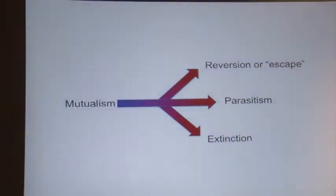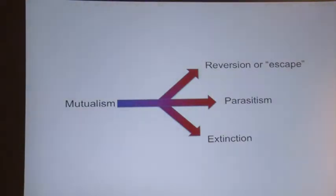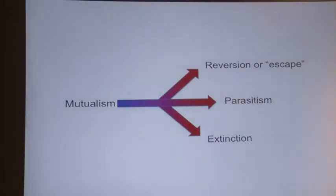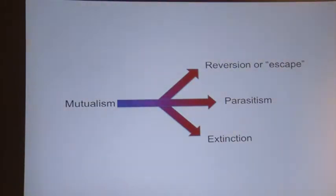It sounds like we can almost think about interactions between species the way we think about interactions between individuals — if you don't follow the social rules, the interaction is going to break down and not be stable.